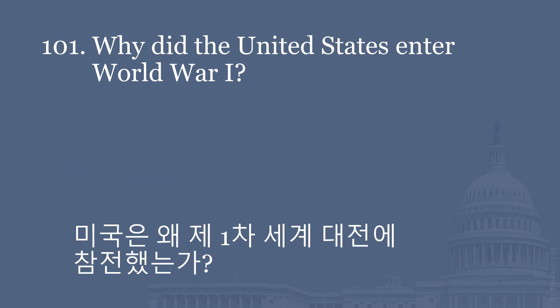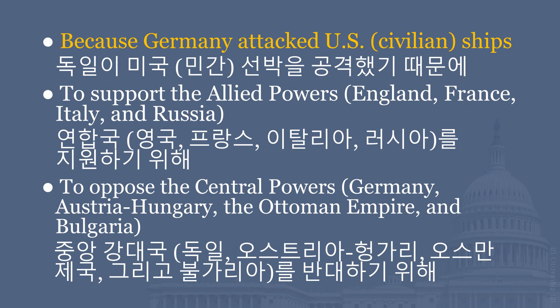Why did the United States enter World War I? Because Germany attacked U.S. civilian ships. To support the Allied Powers — England, France, Italy, and Russia. To oppose the Central Powers — Germany, Austria-Hungary, the Ottoman Empire, and Bulgaria.